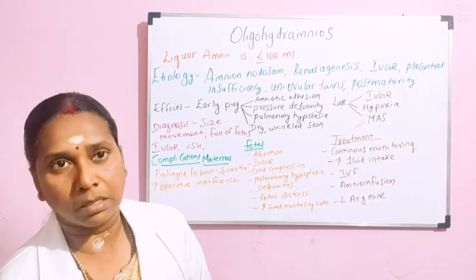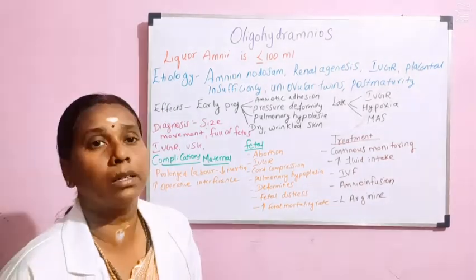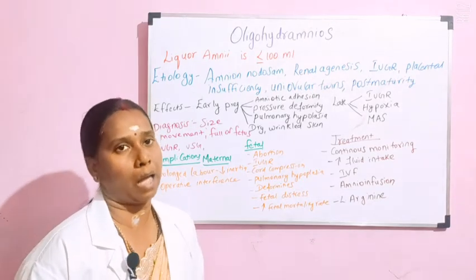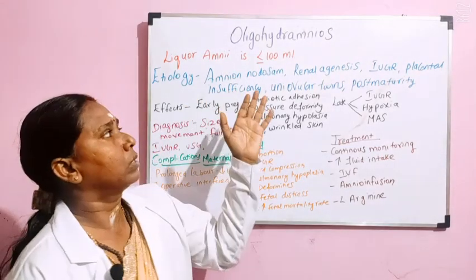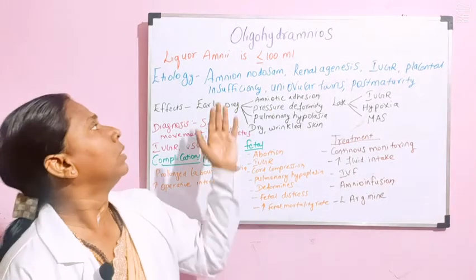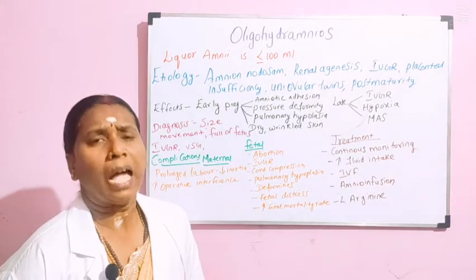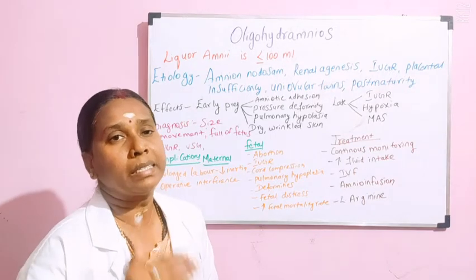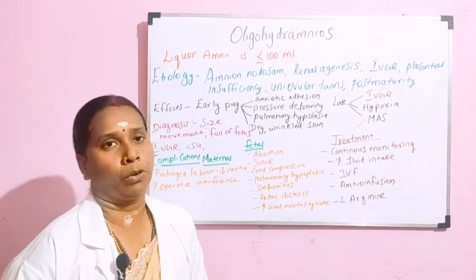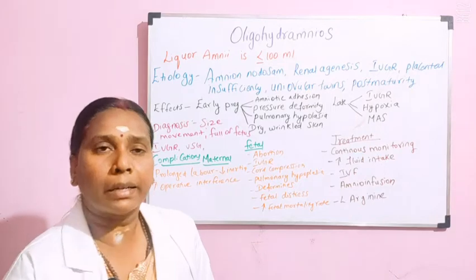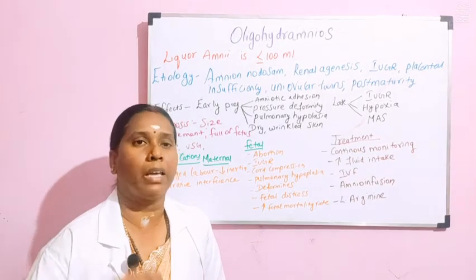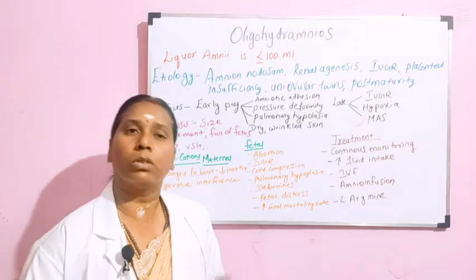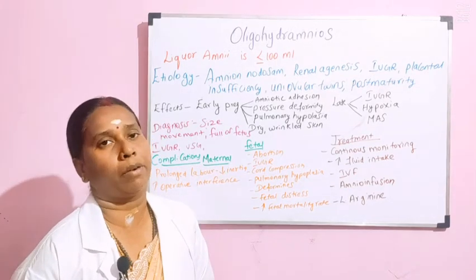Why does this condition happen? Those are the etiological factors for oligohydramnios. The first cause is amnionodosum. Amnionodosum is nothing but decreased secretion of amniotic fluid — the production of amniotic fluid is very less, and because of that it leads to oligohydramnios.